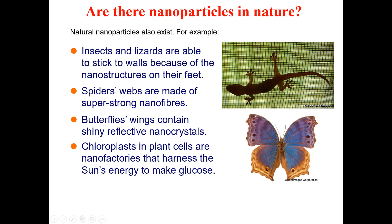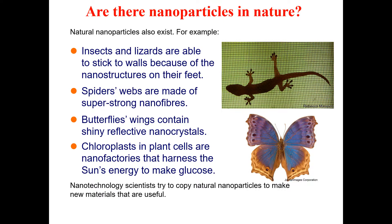Another example is chloroplasts in plant cells. Chloroplasts are basically nanofactories that harness solar energy to make glucose. So nanotechnology exists not only in animals but also in plants. The chloroplasts inside plant cells are nanofactories for harnessing sun energy to produce glucose.